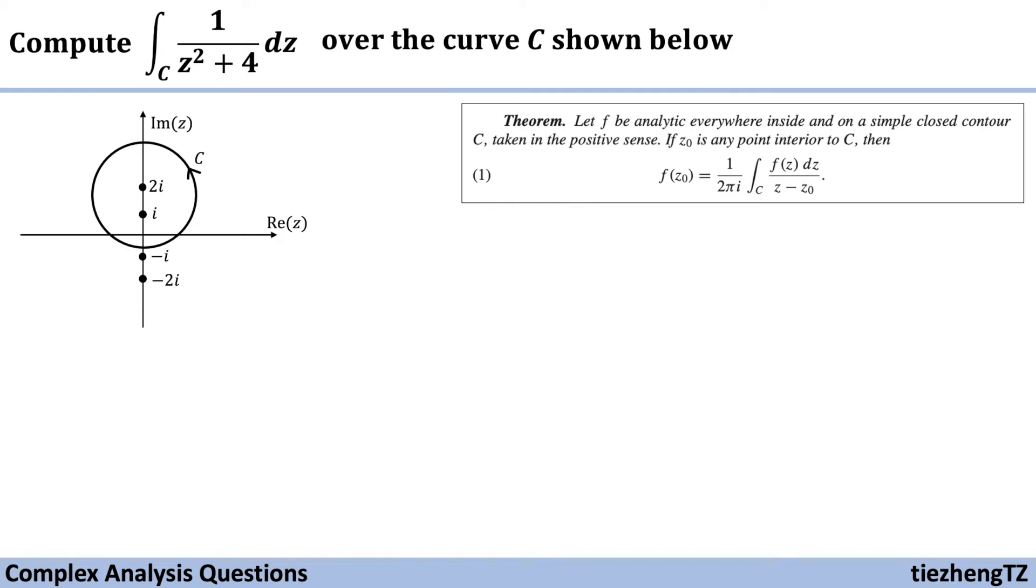So now let's take a look at our question. The denominator part z squared plus 4 can be rewritten as (z + 2i)(z - 2i). And from the curve C, we know the point (0, 2i) is inside this given contour. Therefore, the corresponding f(z) function becomes 1 over z plus 2i.